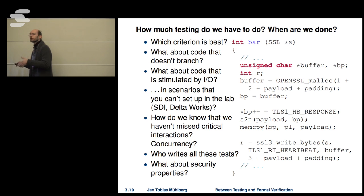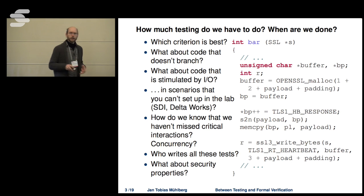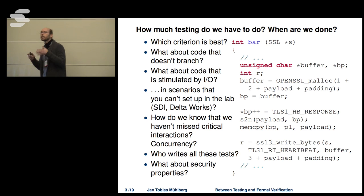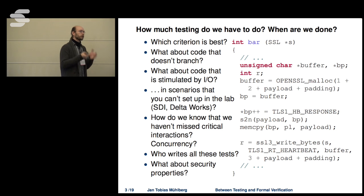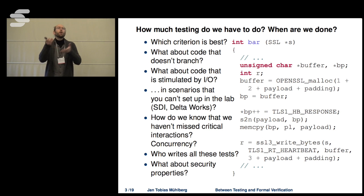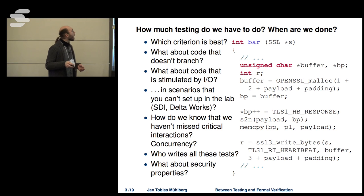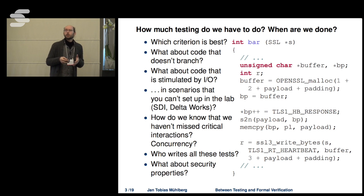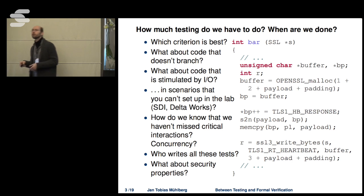How do we test code that does not branch at all? How do we test code that depends on inputs that are really hard to generate in the lab — like the Dutch Delta Works or the SDI program, where inputs depend on catastrophic conditions measured by sensors? How would you ever generate all the potential test cases to ensure a safety-critical system reacts appropriately in all possible real-world conditions?